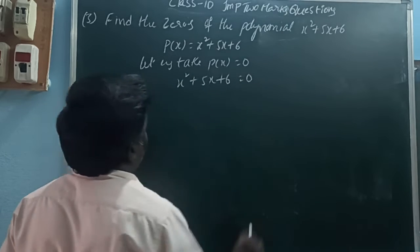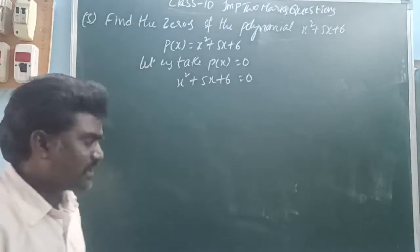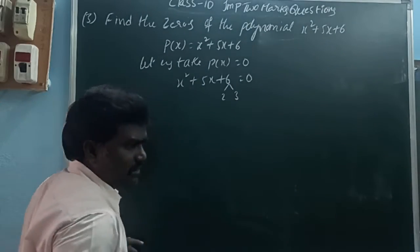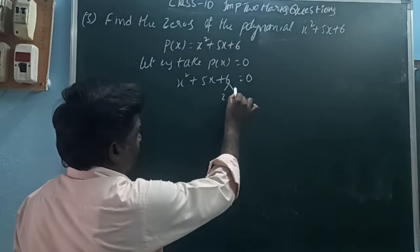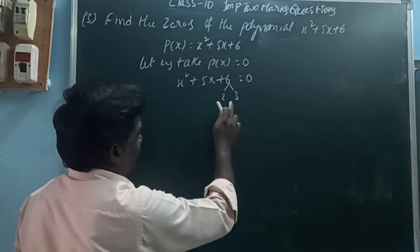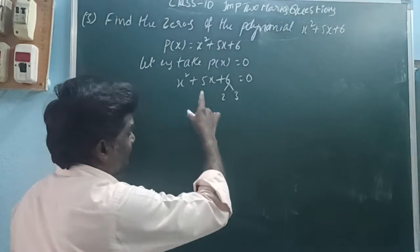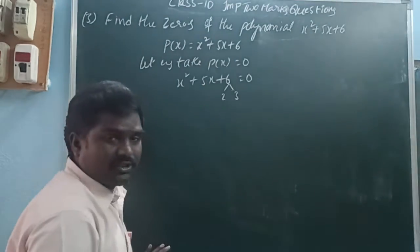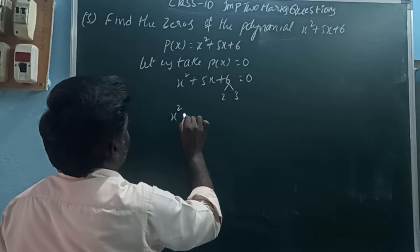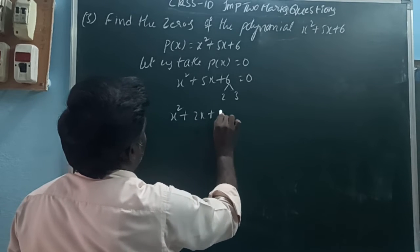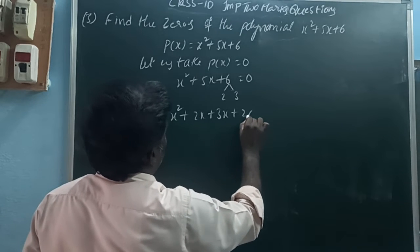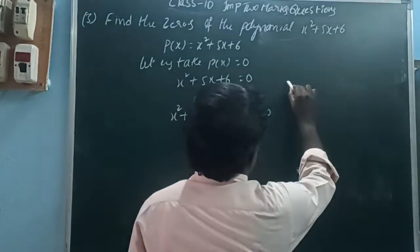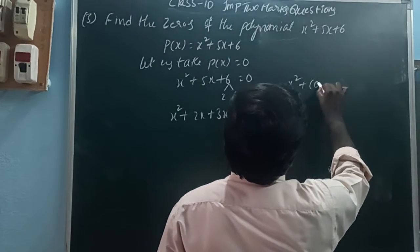Setting it equal to 0, we use factorization. 6 can be written as 2 × 3. The product of 2 and 3 is 6, and their sum is 5, which is the x coefficient. The formula is x² + (a + b)x + ab = (x + a)(x + b). We can apply that formula here.